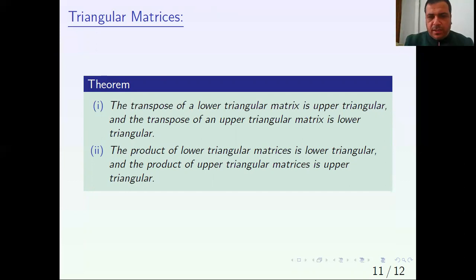And the product of upper triangular matrices is upper triangular. So we covered: transpose of lower is upper, transpose of upper is lower. And we covered the product of lower triangular with lower triangular gives lower triangular, and upper multiplied by upper gives upper.